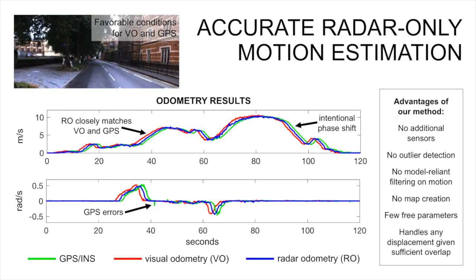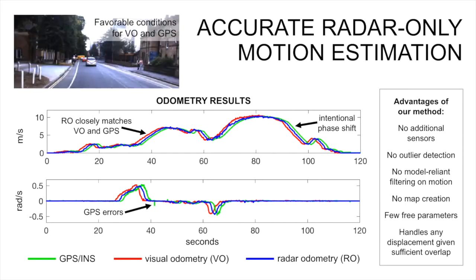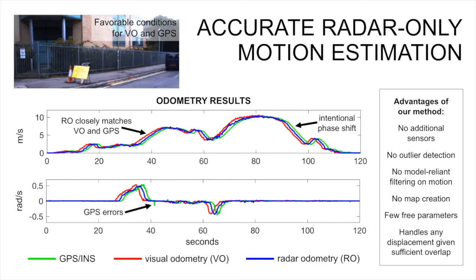Here we see that radar odometry closely matches the results of visual odometry and GPS-INS, under favorable conditions for the latter two sensors.